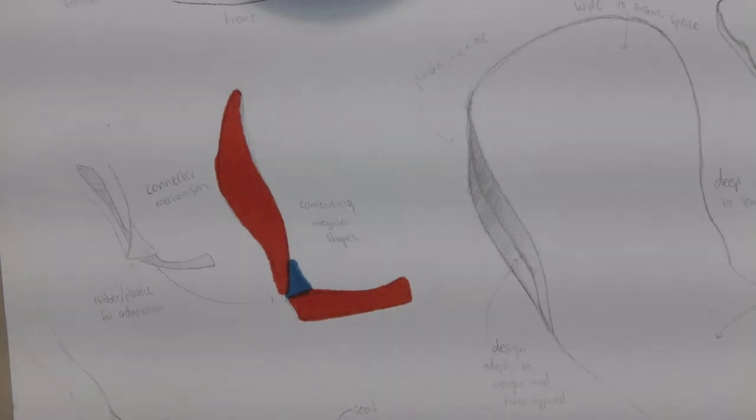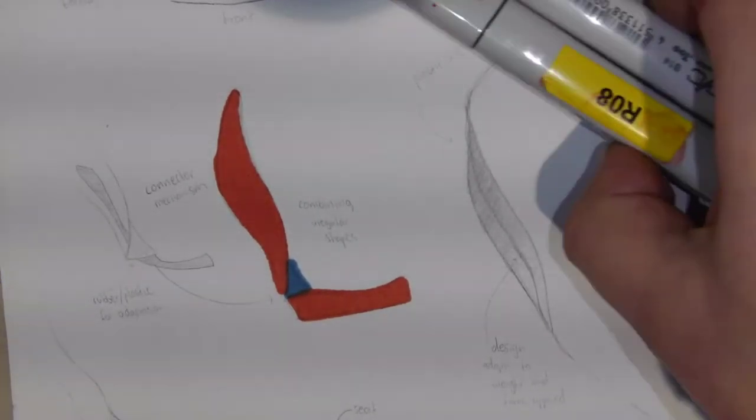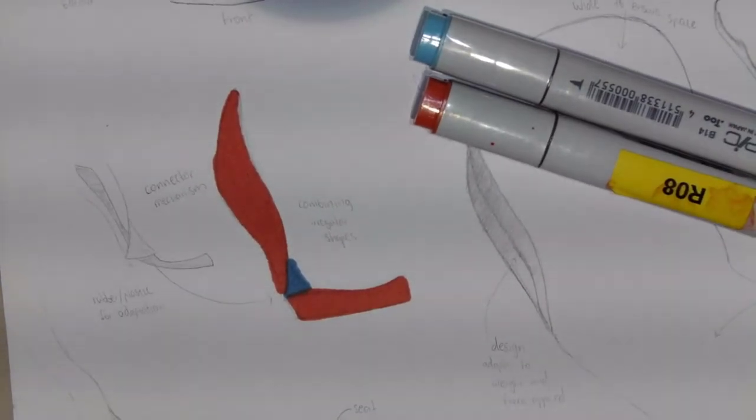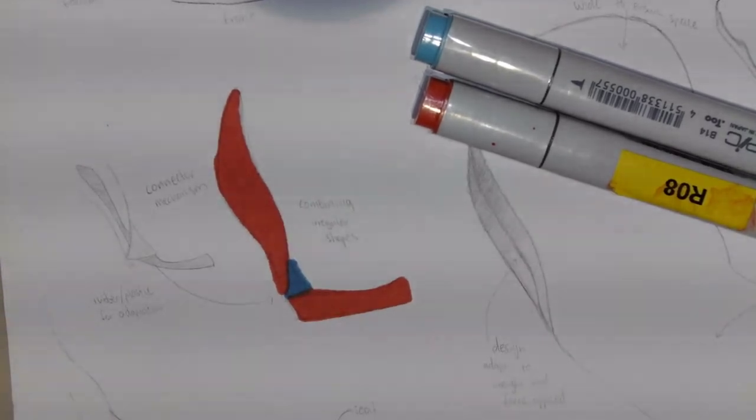And what I need to do now is I need to establish a light source. So this is basic Copic marker rendering by the way. There are better methods of doing this, but this is one of the ways you can explore in your folio.